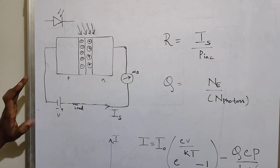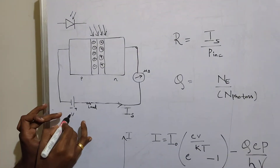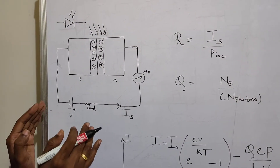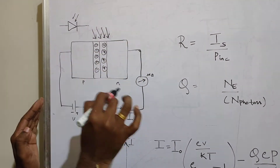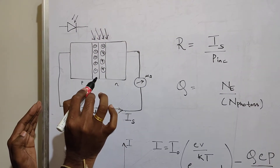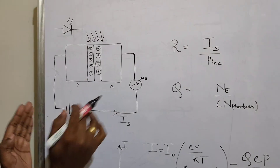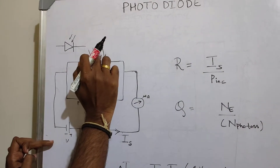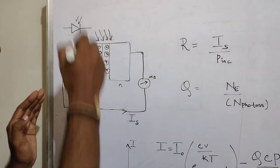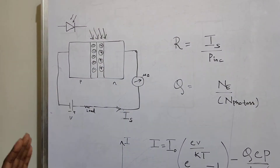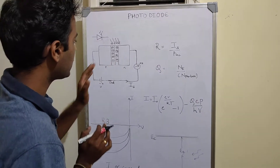A question arises: why is voltage applied if it is not needed for current generation? The voltage is required for current flow, but the driving force behind the generation of current is not this voltage — it is the photons. The voltage is only applied to support the flow, but the generation itself is driven by the incident photons. This photodiode operates in reverse bias.